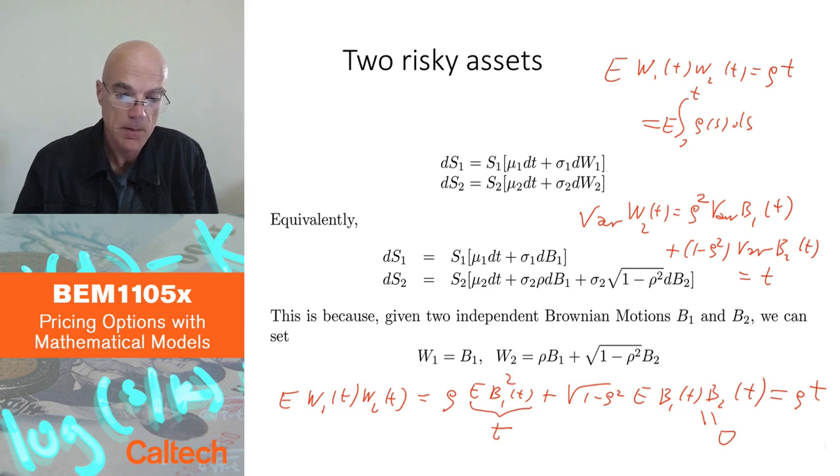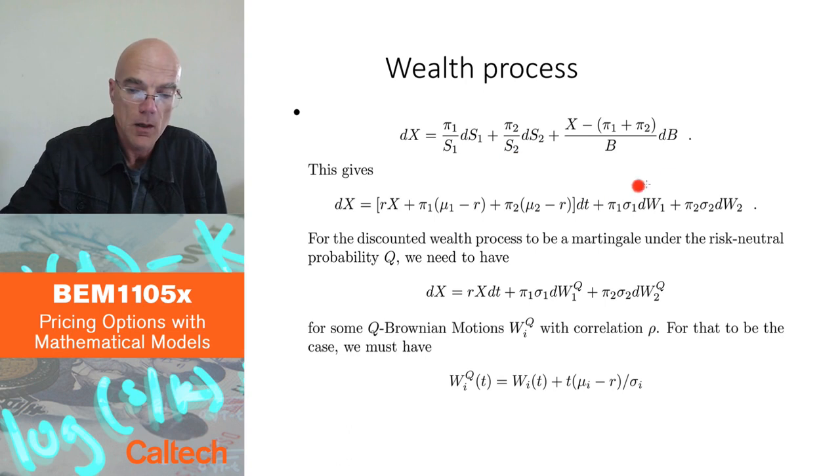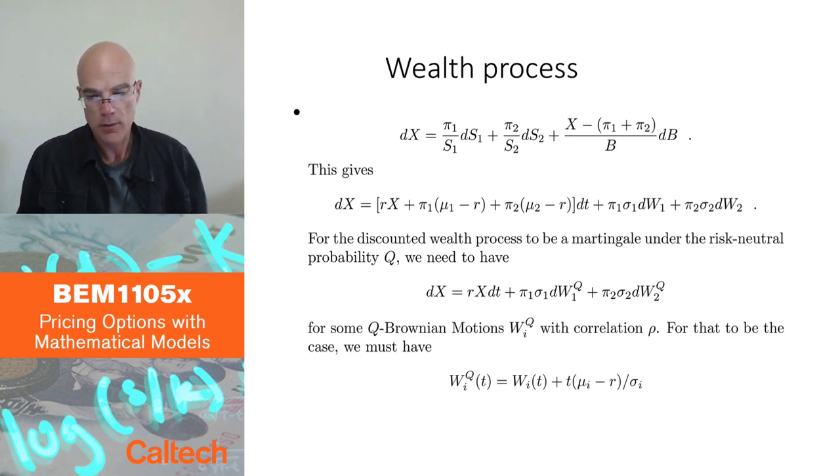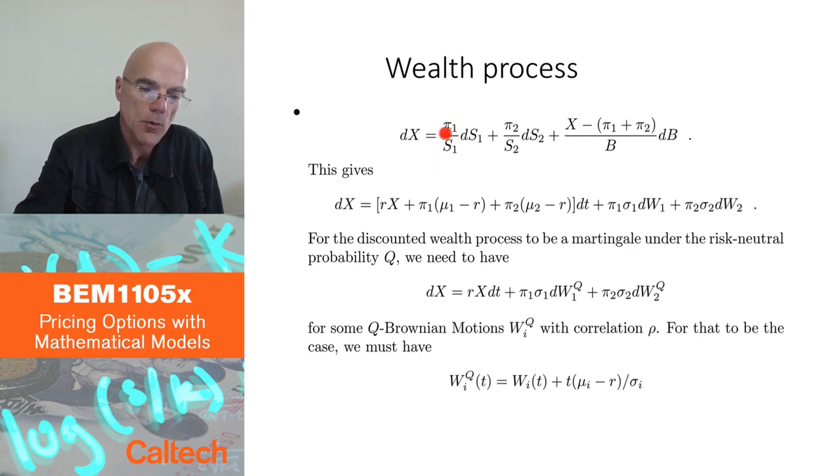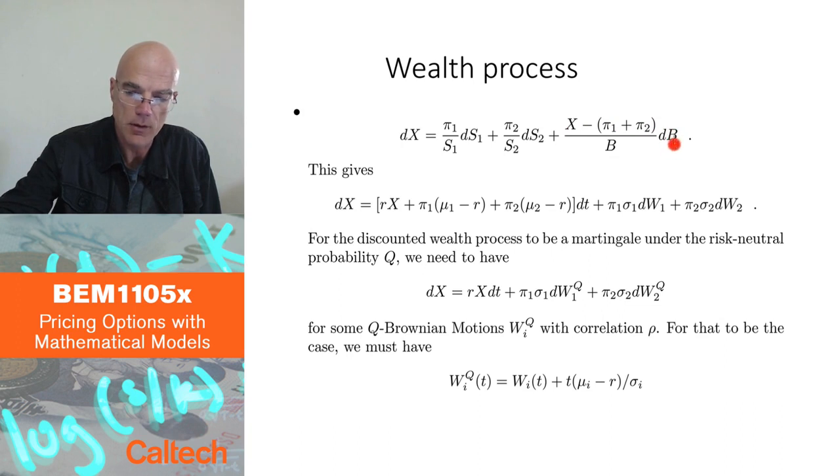Let's go on. This is going to be very similar to what we did before, but just to be complete, let's do it. The wealth process corresponding to trading in these two stocks and the bank account is going to be number of shares in S1. So pi1 and pi2 are amounts in the stocks. So pi1 over S1 is number of shares in S1 times change in S1 plus number of shares in S2 times change in S2. Then the remaining money goes to the bank, X minus pi1 plus pi2. That's how much is left to the bank over B is the number of units in the bank times the change in the bank account.